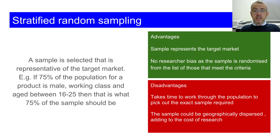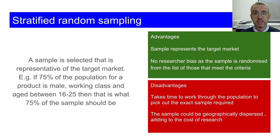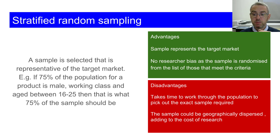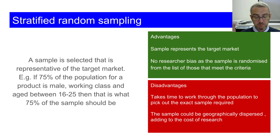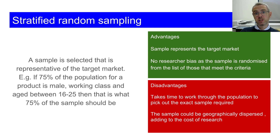The good thing is it does represent your target market and there's no research bias since the sample is randomised from those who meet the criteria — so you get your list of 16 to 25 working class men and then randomly sample from that. Disadvantages: it takes time to work through the population, time is money, and there are cost implications. The sample could also be geographically dispersed — you could have somebody in Aberdeen, Inverness, Glasgow, and the Borders, meaning you'd have to send researchers out to those areas. If you're doing it online or by phone it works well, but doing straight-up primary research by going out to speak to everyone has cost implications.